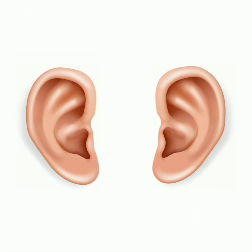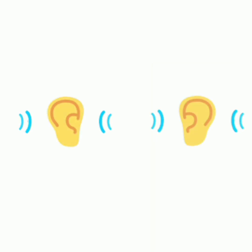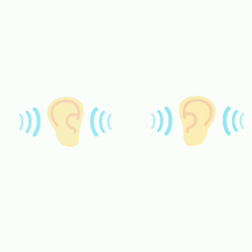Ears — E, A, R, S — ears. Yane kaan. We have two ears. We hear with the help of our ears.